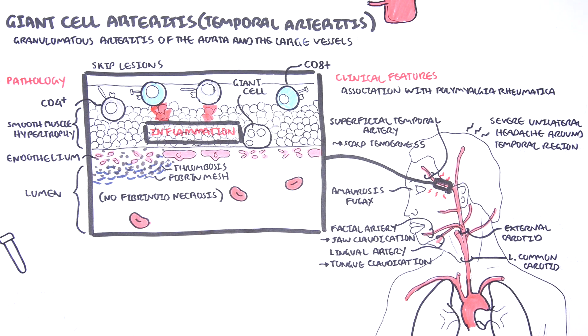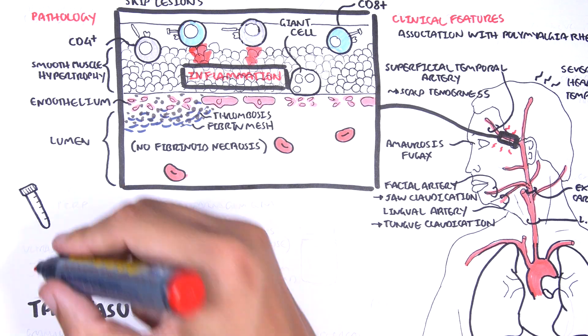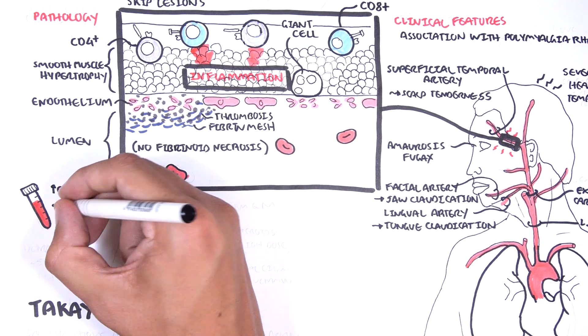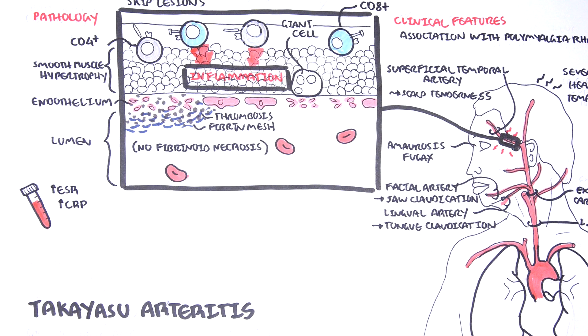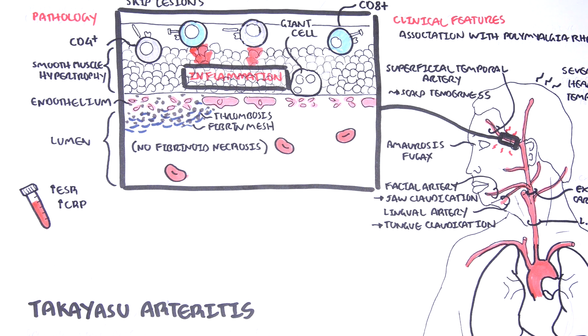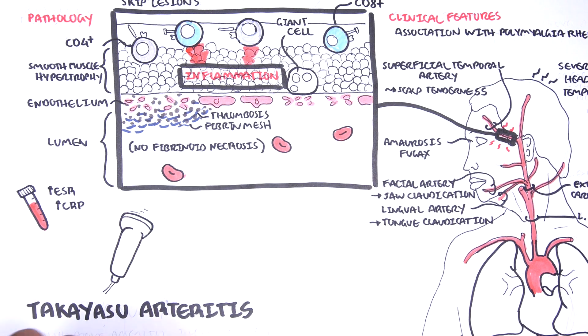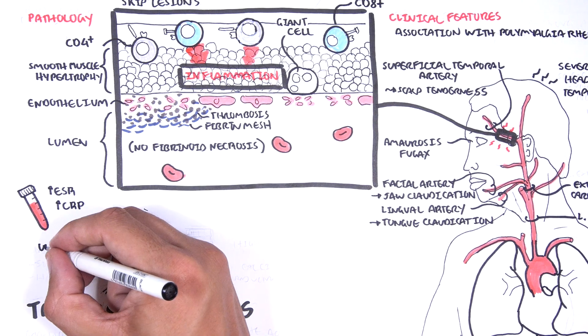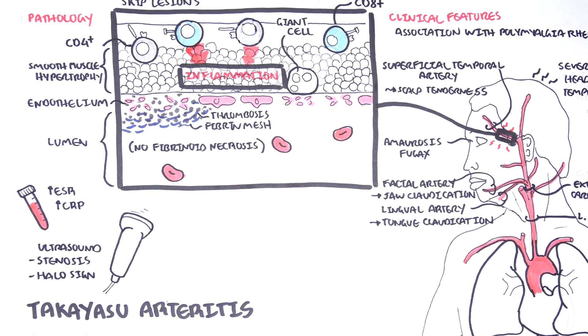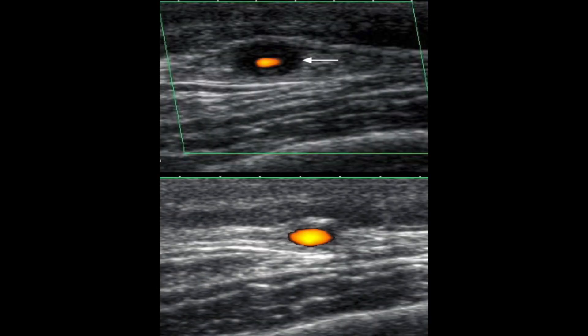Investigations for suspected giant cell arteritis or vasculitis include blood tests looking for ESR — the erythrocyte sedimentation rate — which is a long-term inflammatory marker, and CRP, C-reactive protein, a short-term inflammatory marker. An ultrasound Doppler of the superficial temporal artery can also be performed, which may show signs of artery stenosis or the halo sign. Here is an example of an ultrasound Doppler of the temporal artery showing the halo sign.